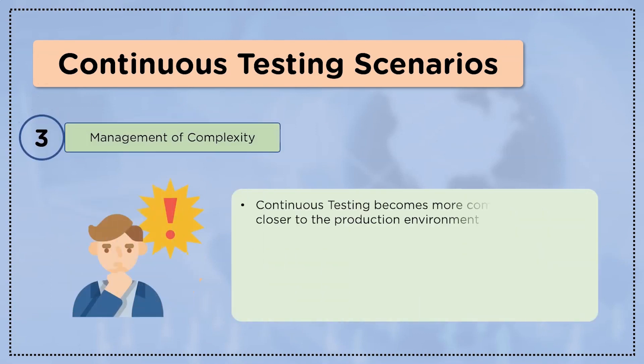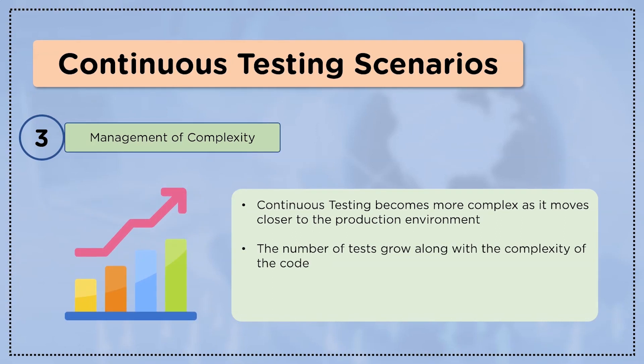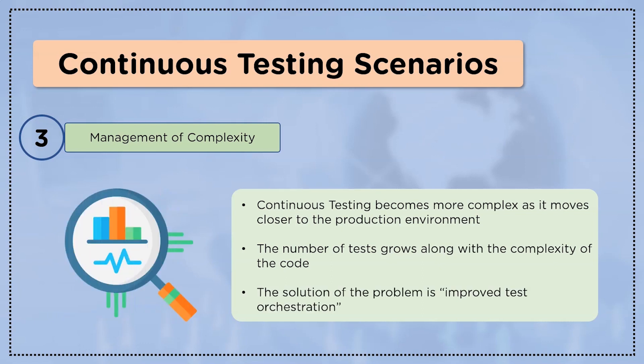The next scenario is the management of complexity. Continuous testing becomes more complex as it moves towards the production environment. The number of tests grows along with the complexity of the code, and tests must be updated every time the phases are updated, increasing the overall time to run these tests and eventually delaying the release process. The solution is improved test orchestration, which provides the right amount of test coverage in shorter sprint cycles and enables teams to deliver with confidence.